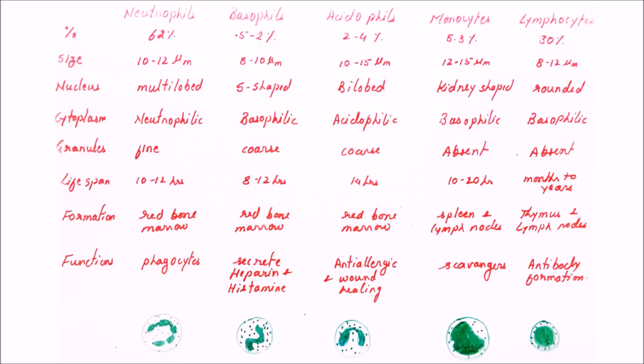The diagrams are given at the bottom of this table. In neutrophils, we see the nucleus is multi-lobed; there are many lobes in the nucleus. Coming to basophils, the nucleus is normally three or four lobed and the shape becomes like S. Acidophils have bilobed nucleus, and this is easier to remember.